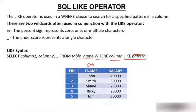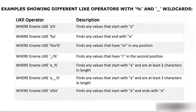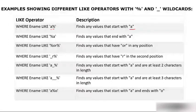For example, WHERE name LIKE 'a%' means you are looking for names starting with 'a' — any values that start with 'a'. WHERE name LIKE '%a' means you are looking for names ending with 'a'.